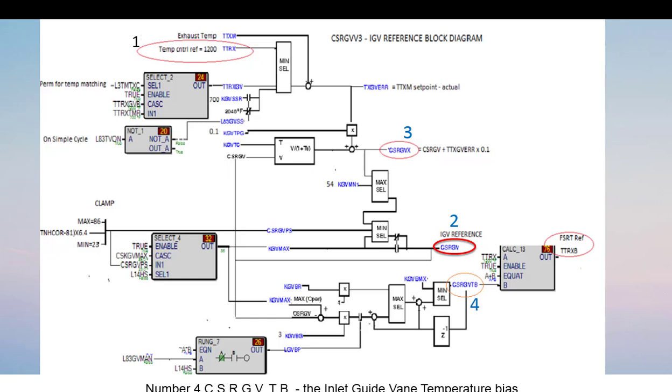Number 4, CSRGVTB, the inlet guide vane temperature bias.